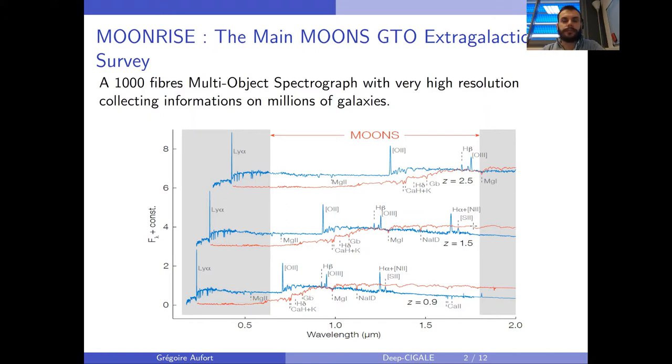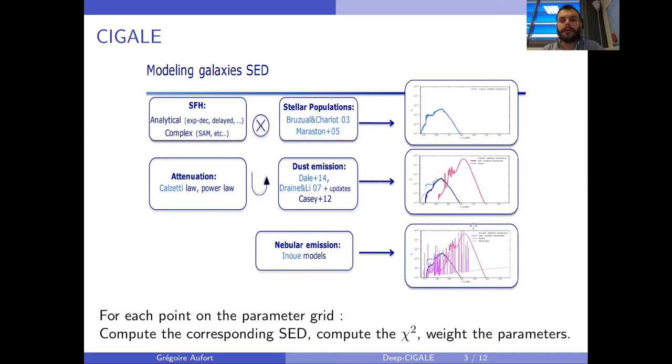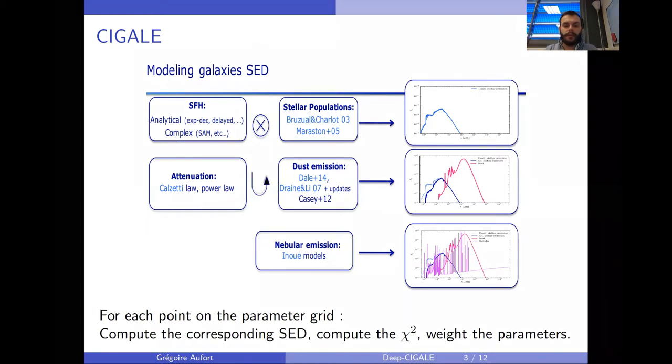CIGALE is a modeling and fitting software. It adopts a very modular design where you have several components of the galaxy emission: the star formation history and stellar population, the dust attenuation and emission, and the nebular emissions are all modeled separately and then combined. For each of those components, the user can choose the model they want. Several are already implemented and users can implement their own and just plug it into the software.